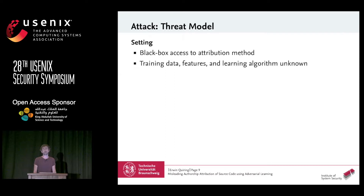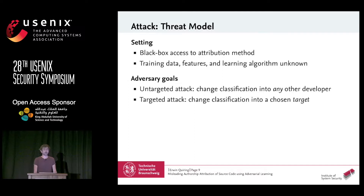For our attack, we assume an adversary with black box access. She can send her source code to the method and retrieve the corresponding prediction scores. The training data, the features, and the learning algorithm are not known. In our paper, we also test the transferability scenario where the adversary has some training data but not access to the original classifier — it also works, but I won't cover that today. I will focus on the black box scenario with an available classifier.